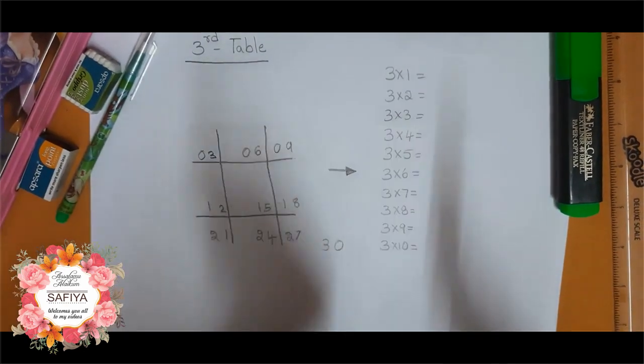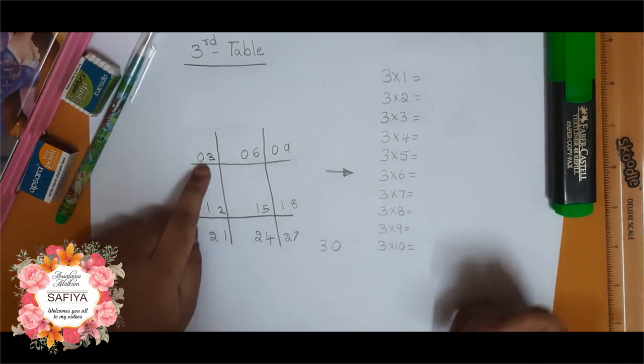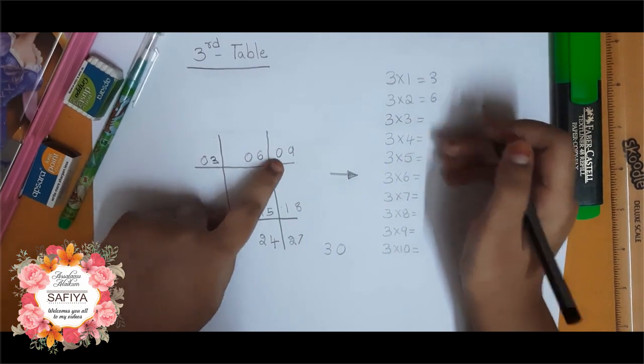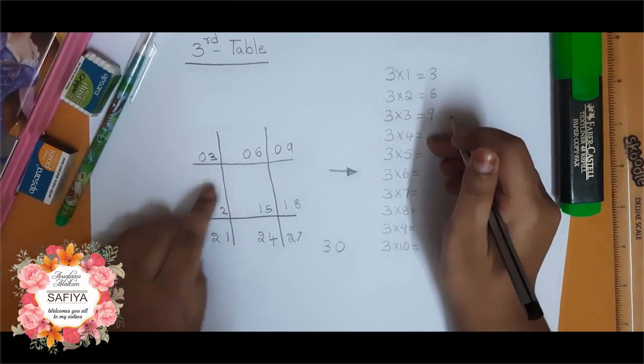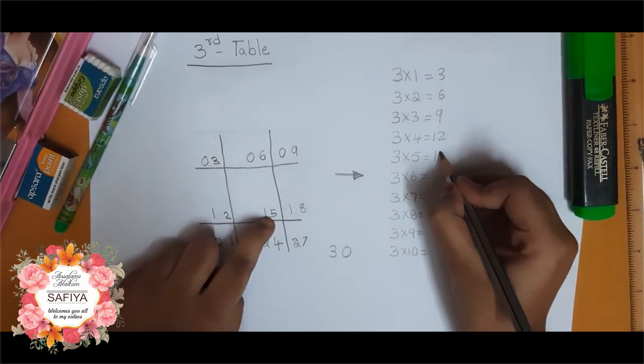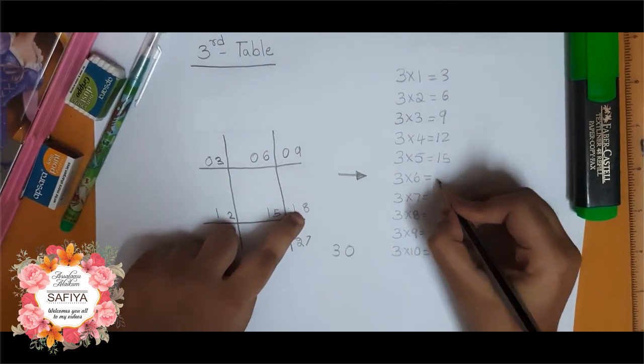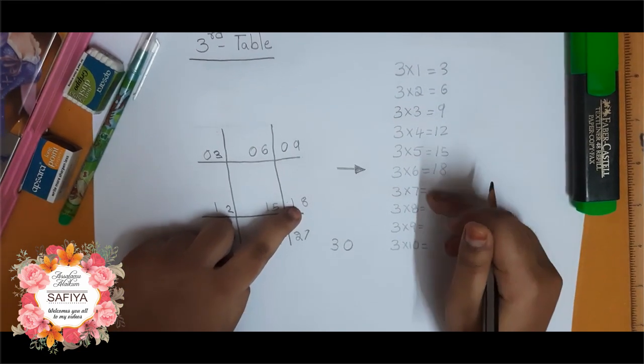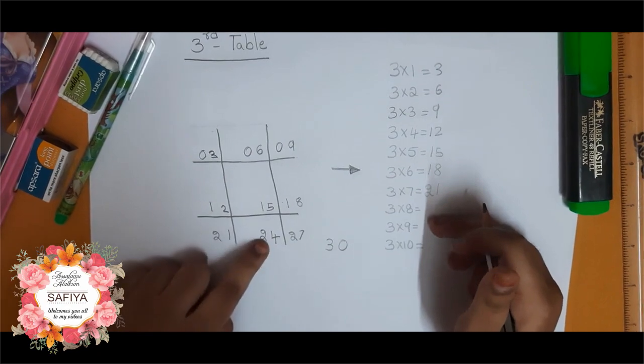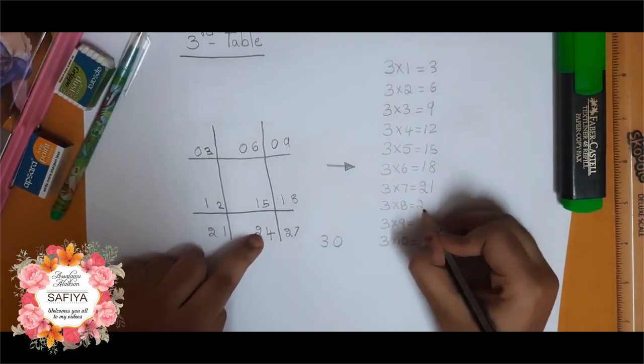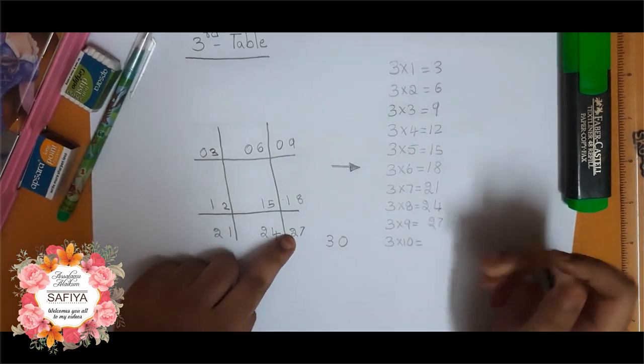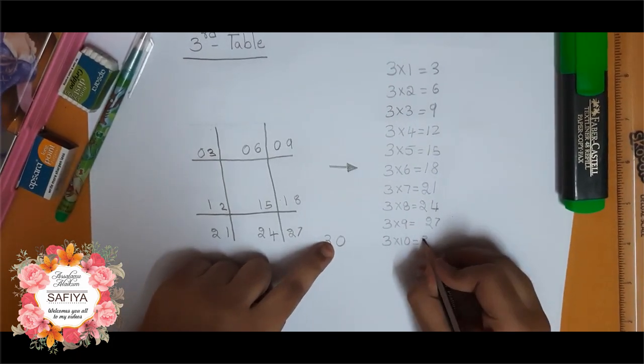So let's transfer here. 3 1s are 3. 3 2s are 6. 3 3s are 9. 3 4s are 12. 3 5s are 15. 3 6s are 18. 3 7s are 21. 3 8s are 24. 3 9s are 27. 3 10s are 30.